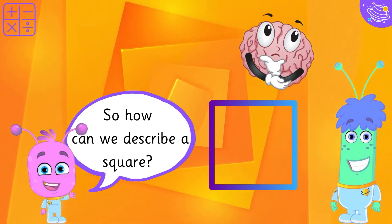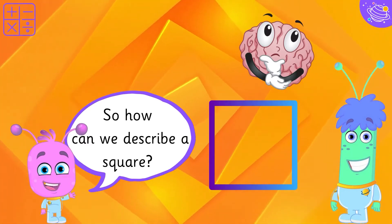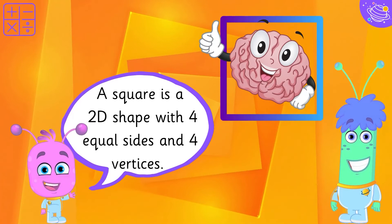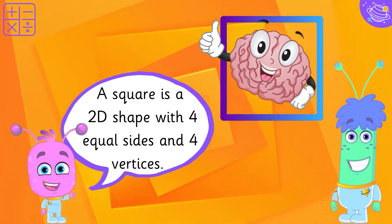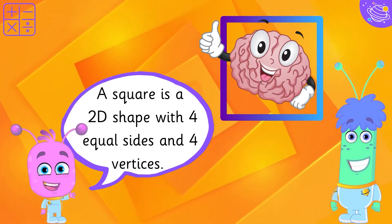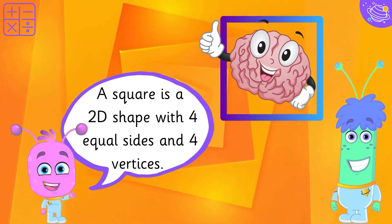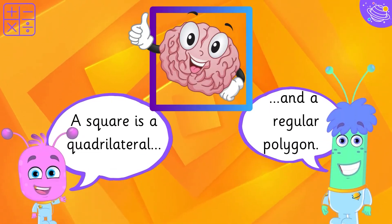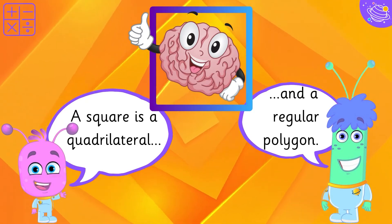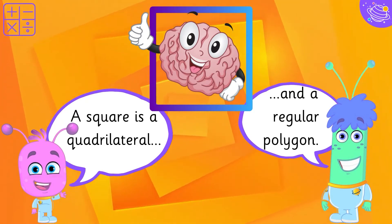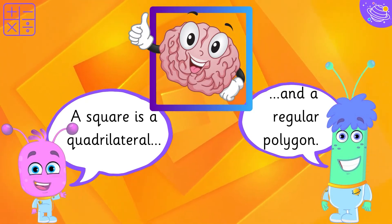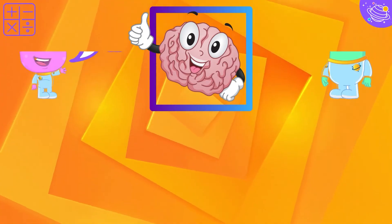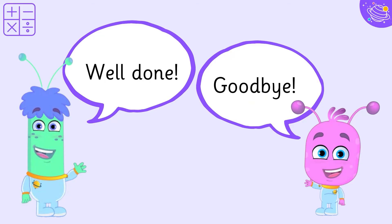How can we describe a square? A square is a 2D shape with 4 equal sides and 4 vertices. A square is a quadrilateral and a regular polygon. Well done!